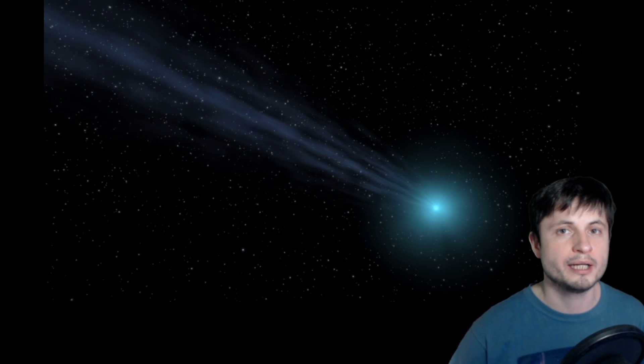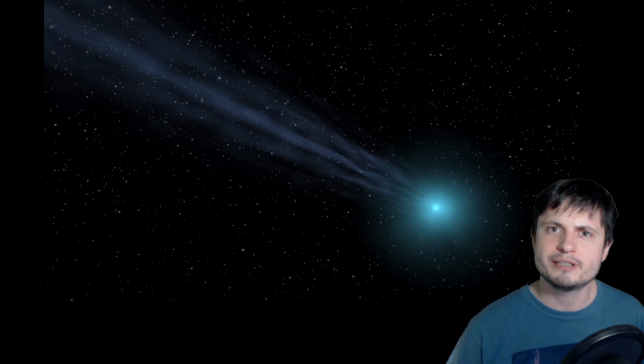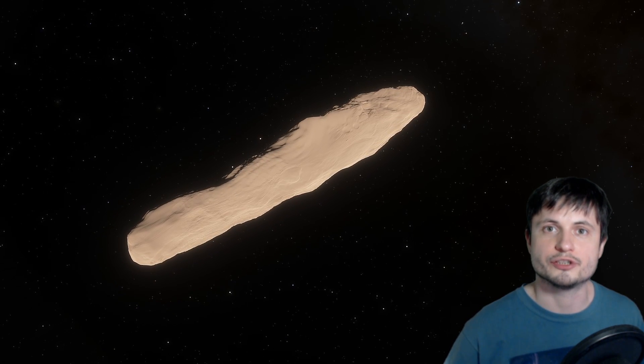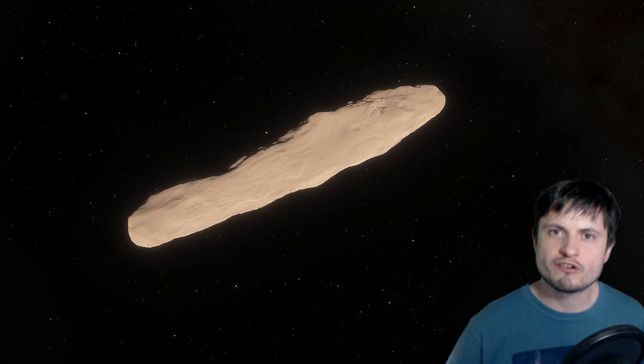Are the comets coming toward the solar system going to be similar to Oumuamua or similar to the comet known as Borisov? Because one of them, Oumuamua, is very unusual. The other one, Borisov, seems to be very similar to what we have here in the solar system. So for now, all we can do is just wait and see. Until we discover more, that's really it.